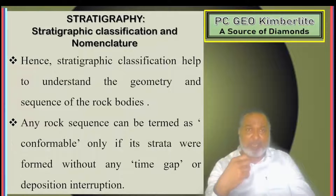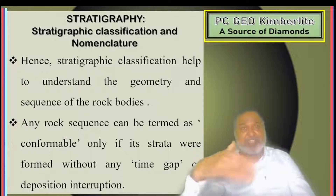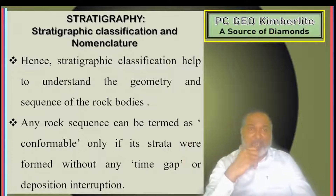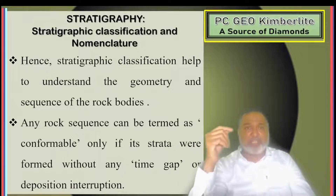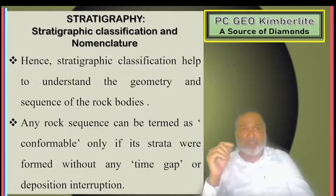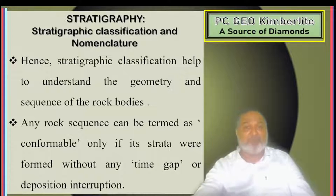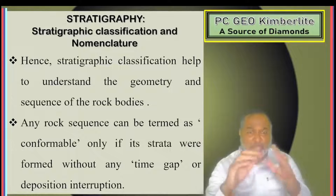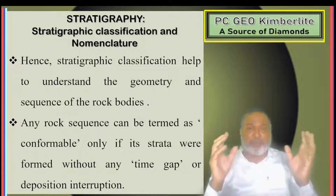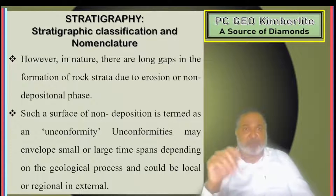But sometimes what happens? A, B, C and D rock have been deposited and after that there is erosion and C and D bed is eroded. Then again a new bed starts depositing — it will deposit as E bed. So A, B, C, D is missing, then immediately E bed will be there. So that is called unconformable — there is a time gap. A conformable series of beds has no time gap; there will be continuous deposition of beds.